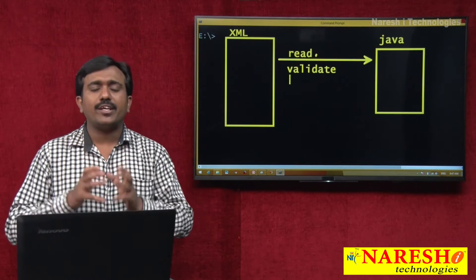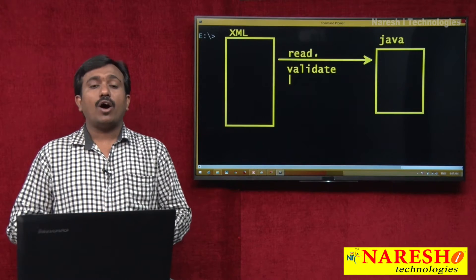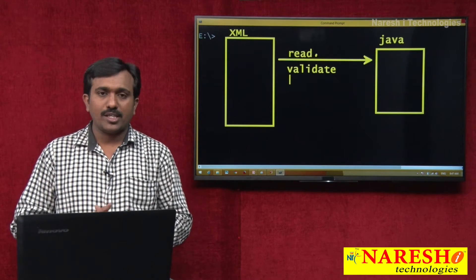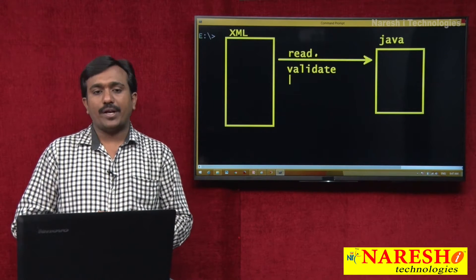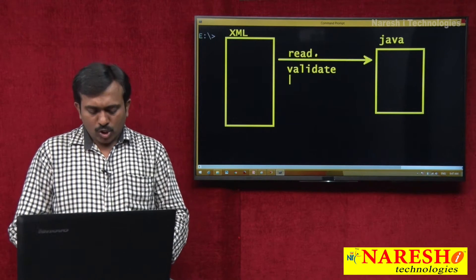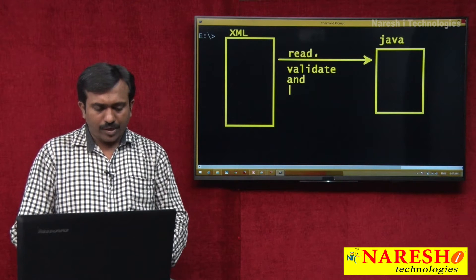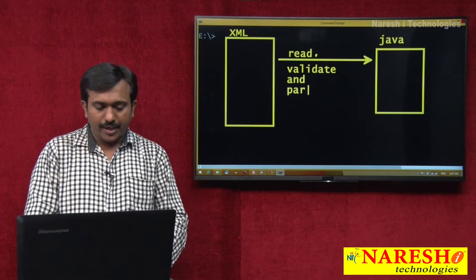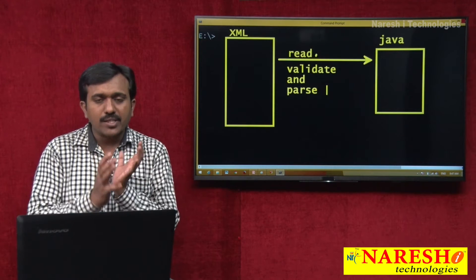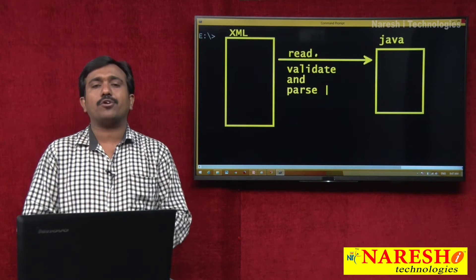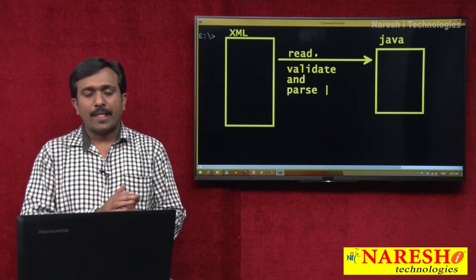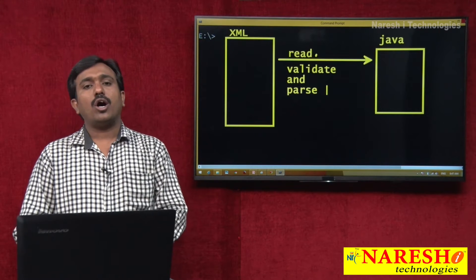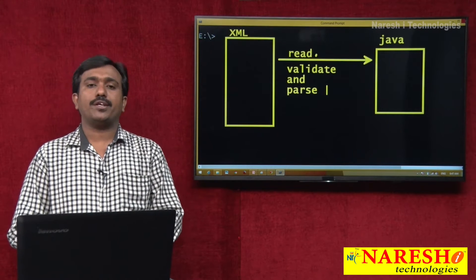JVM only understands object oriented data; JVM does not understand XML format data. So what is required here? Read, validate, and parse that XML document. Parsing means converting — convert the XML document data into object oriented format.